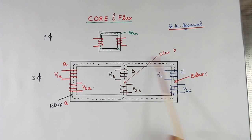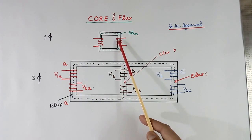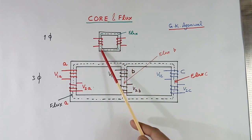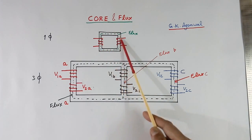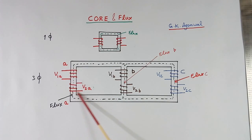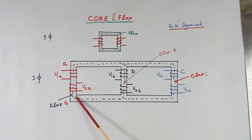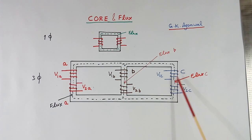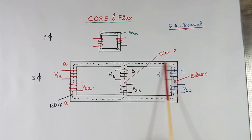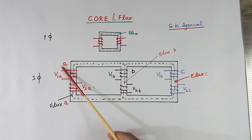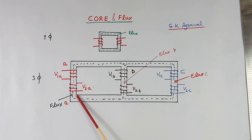This is the core and flux diagram. The black color is the core, and the dotted line is flux. In a single-phase transformer, primary and secondary share the same flux. Similarly here, for phase A, this is the primary winding and this is the secondary winding, so flux is common. Similarly in each phase, both winding fluxes are common. But flux here and in another phase is not the same, because each phase flux links its own limb. So flux in one phase — in both windings — will be equal, but flux of all 3 phases will be different.